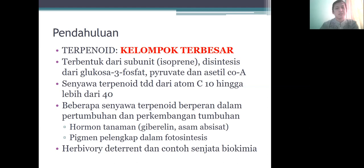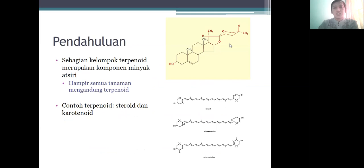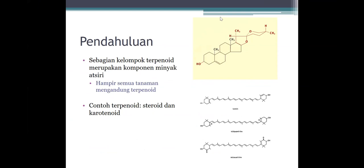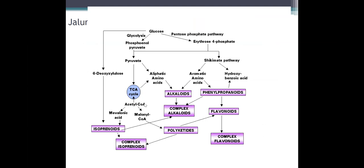Flavonoid dan terpenoid, sama-sama jalur sikimat, sama-sama bersumber dari asam amino. Namun kalau flavonoid, asam amino itu adalah dari fenilalanin. Bagaimana dengan terpenoid? Ternyata terpenoid bukan dari asam amino, melainkan terpenoid ini dari asam asetat. Namun ada juga terpenoid dari golongan asam piruvat. Ini adalah salah satu contoh dari terpenoid: ada steroid, ada lutein, biolaxantin, ada astaxantin — ini adalah salah satu golongan terpenoid, golongan karotenoid atau polyterpenoid, minimal 40 C-nya.